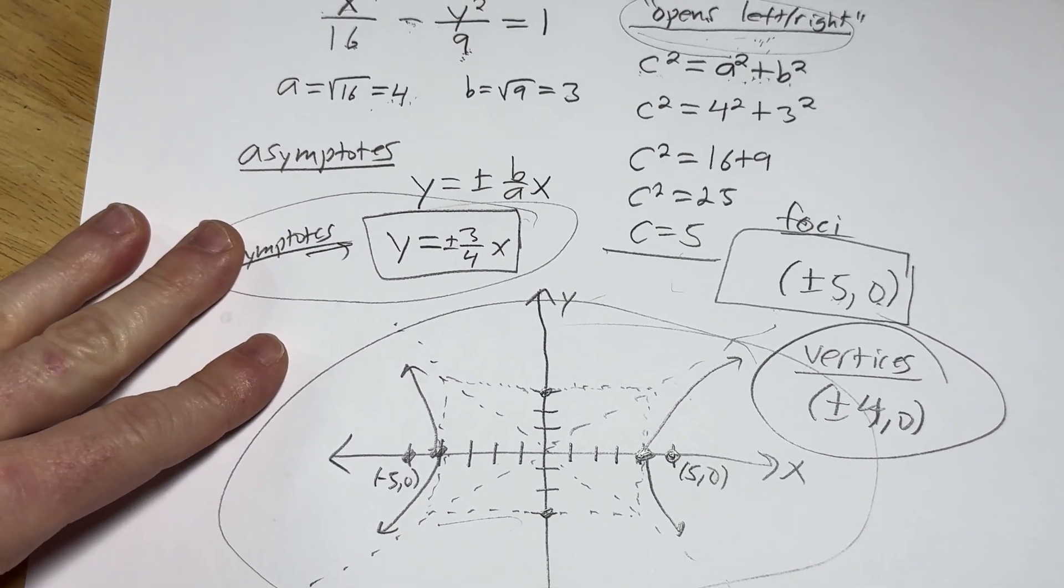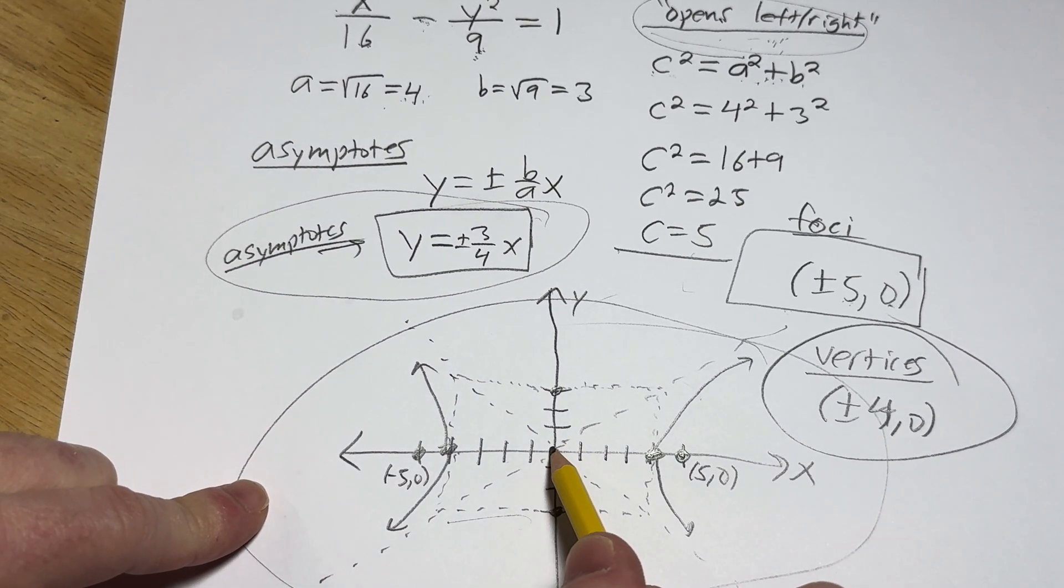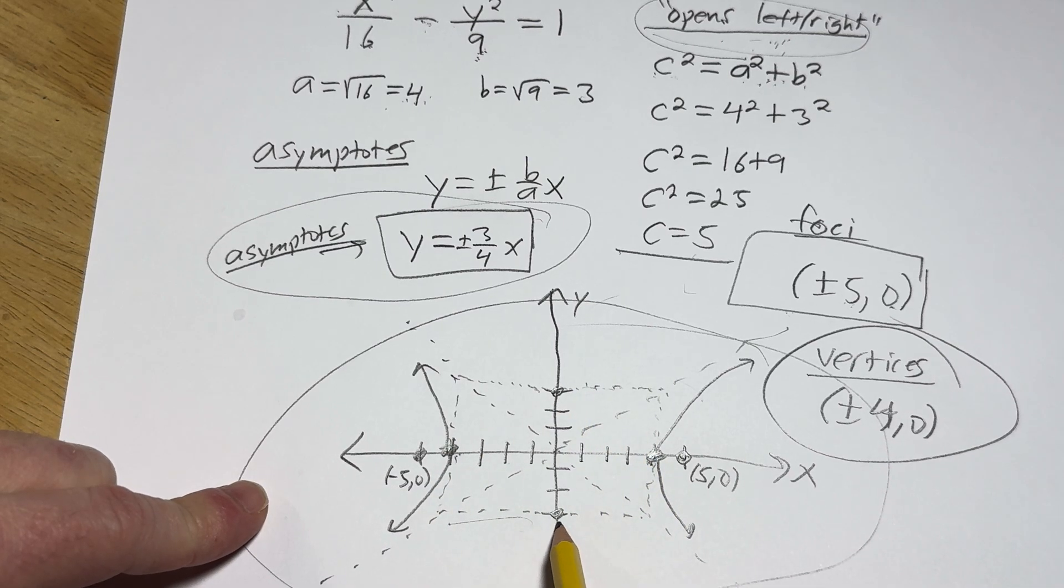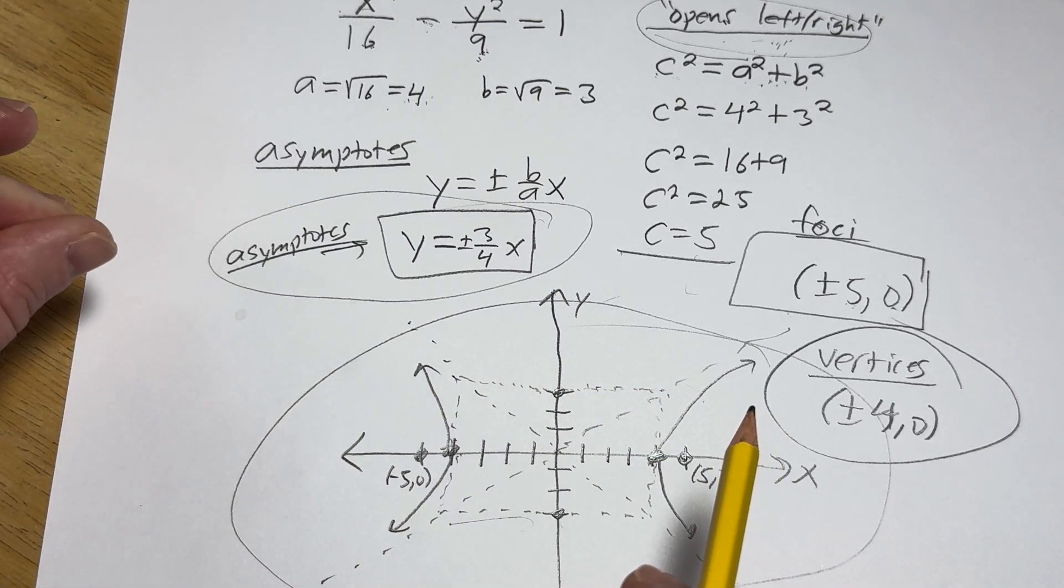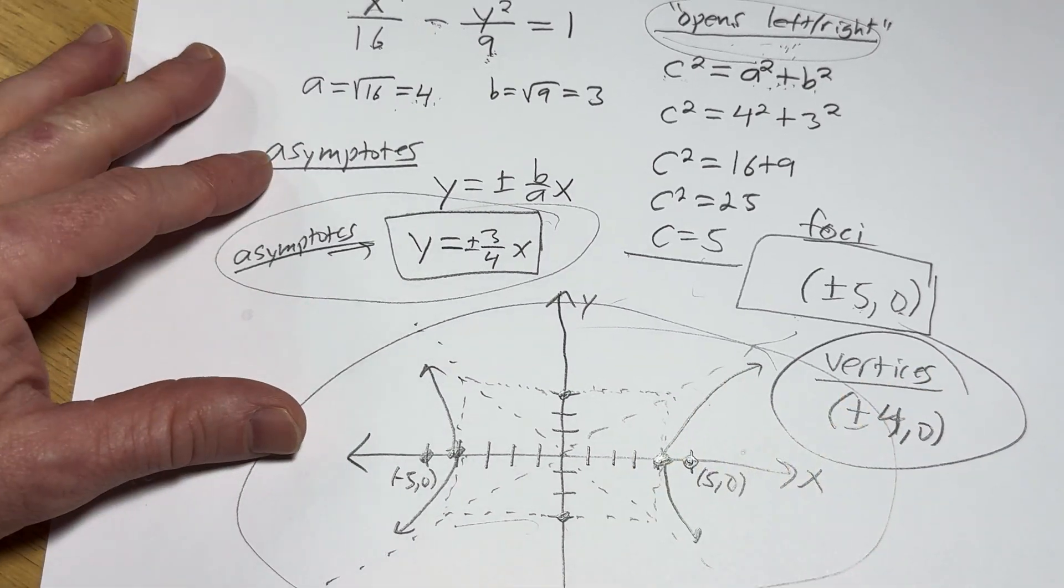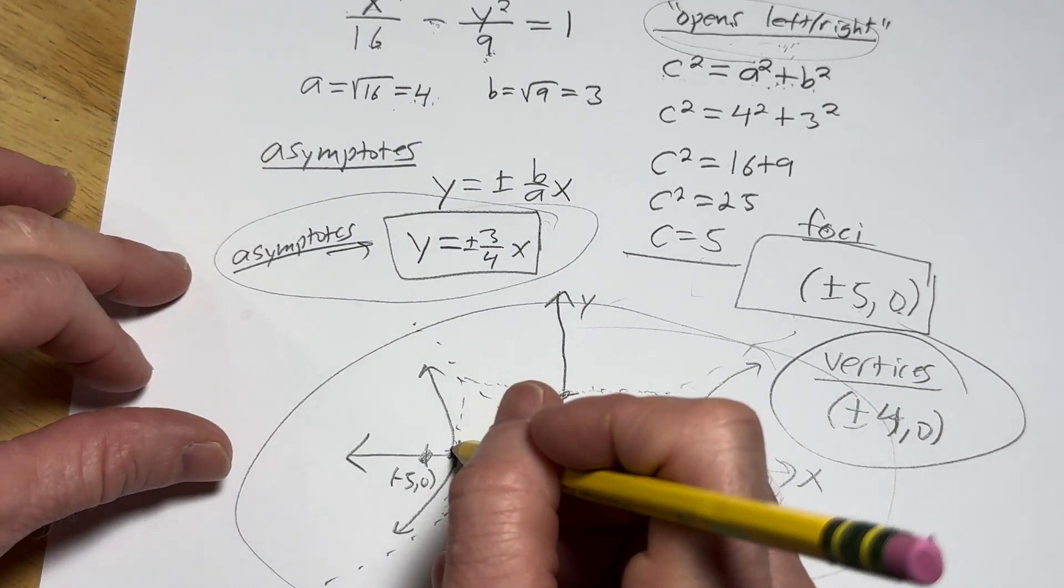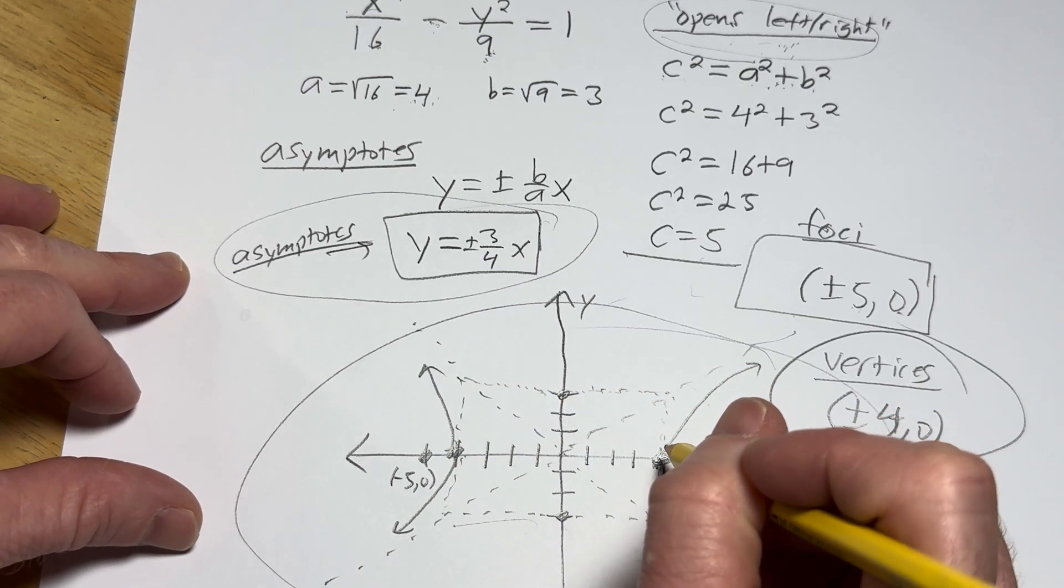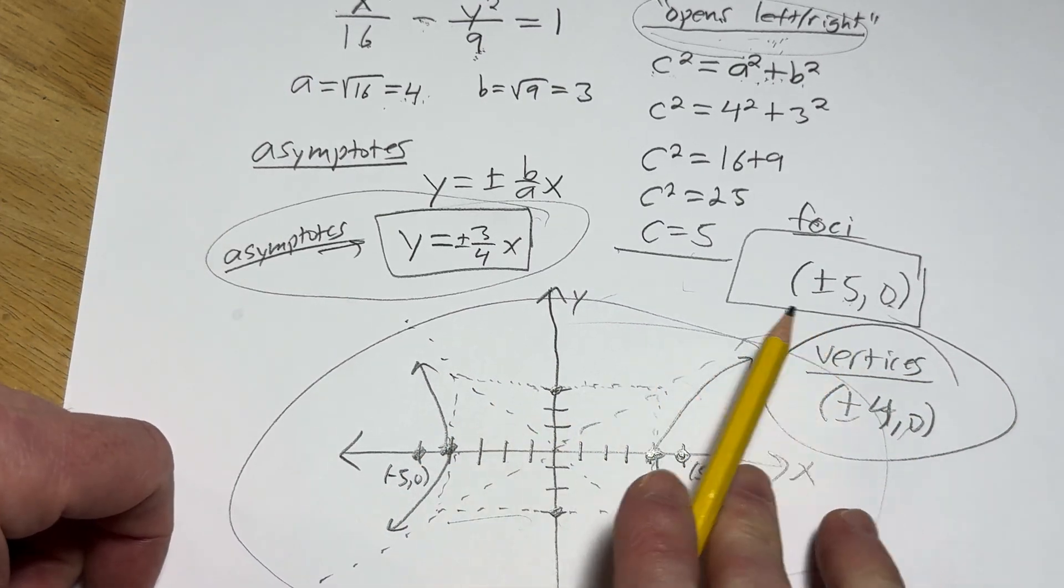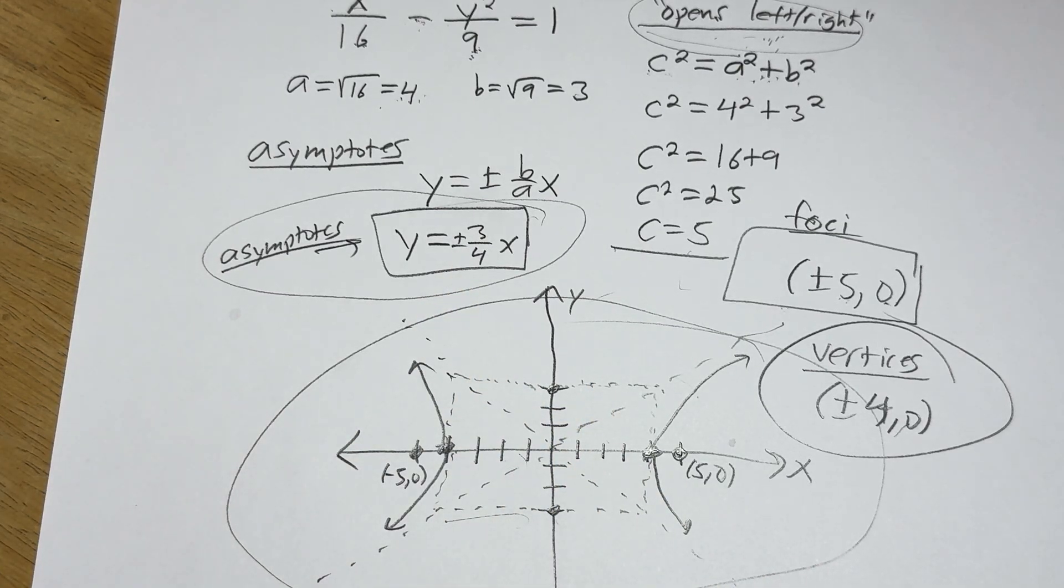And then to graph it, because it opens left and right, from the center, you go left and right by a, then you go up and down by b. You draw that rectangle. Again, it's called the fundamental rectangle. It has the word fun in it. And then you draw the asymptotes. It opens left and right. The vertices are always on the hyperbola. So those are the vertices there. There's the foci. There's the asymptotes. There's the graph. That's everything.